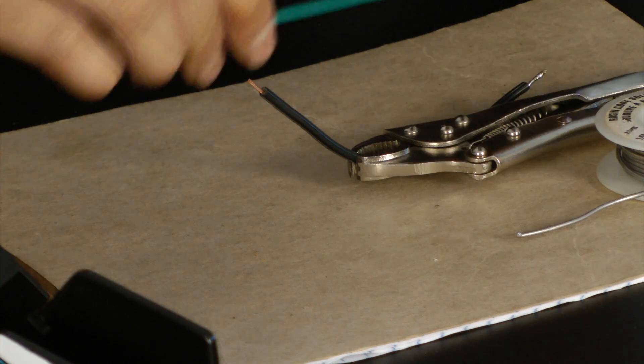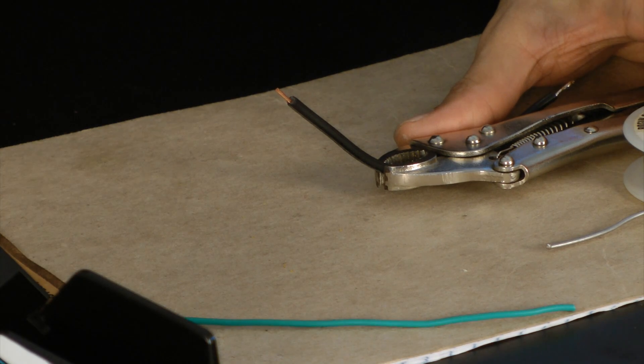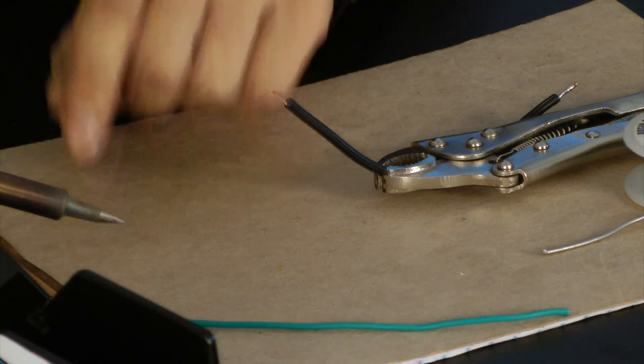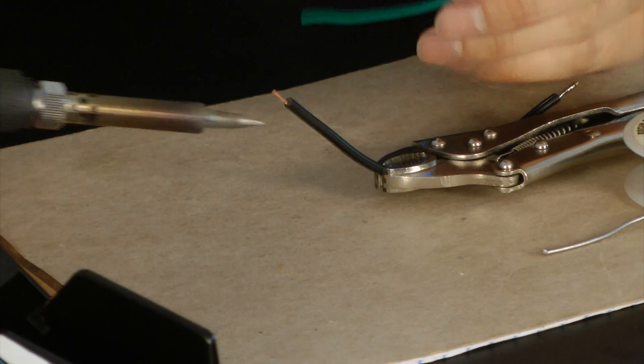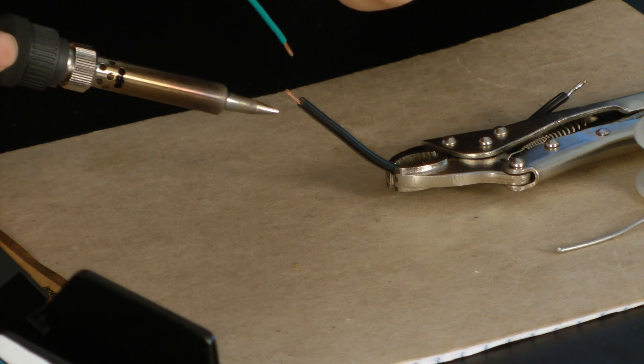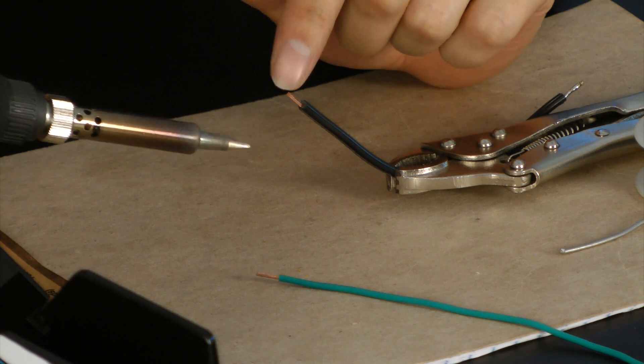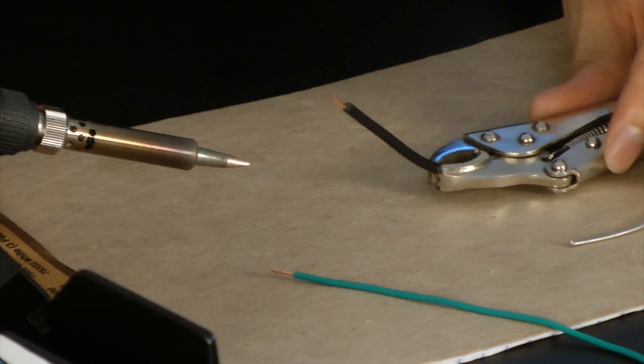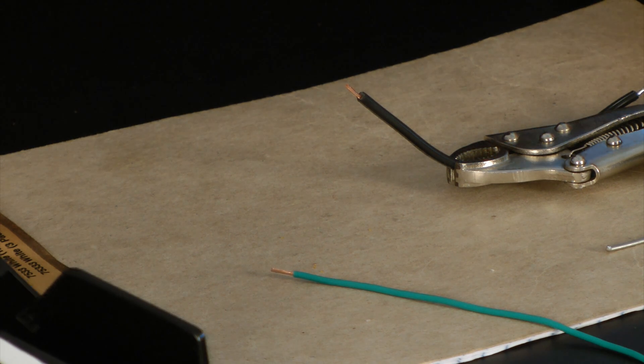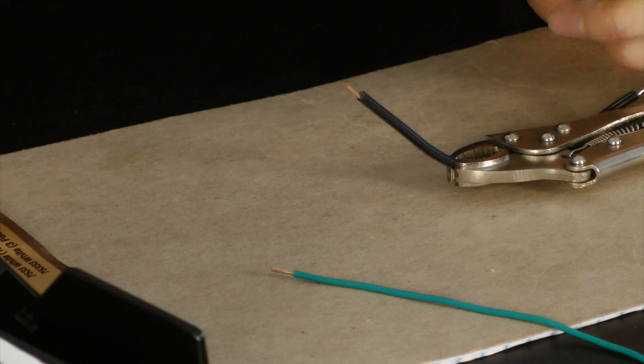Now, the process of soldering is going to involve us applying solder to each wire independently, and then bringing the two wires together and applying heat to both of them to do the final join. The process of applying solder to the individual wires independently is called tinning. So let's go ahead and tin this black wire.